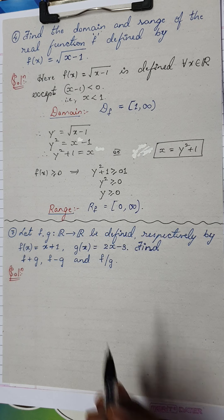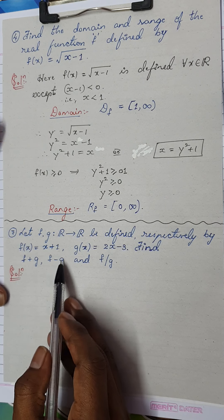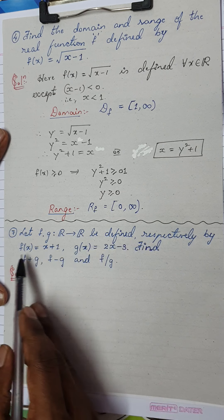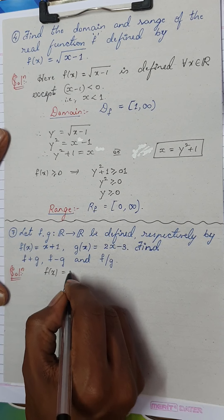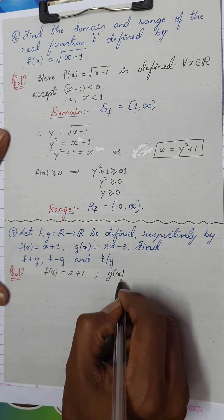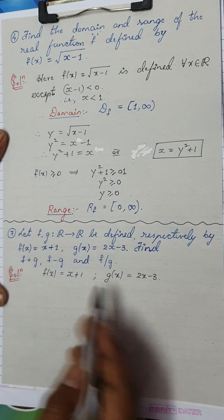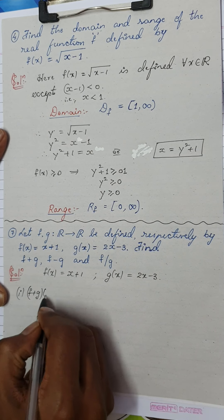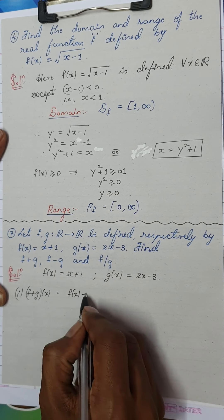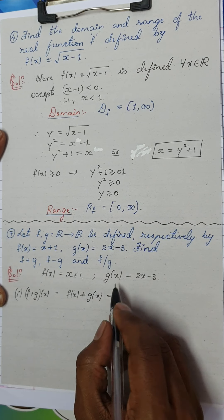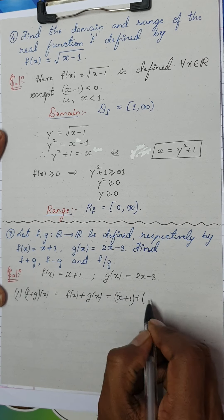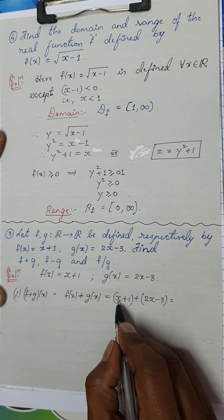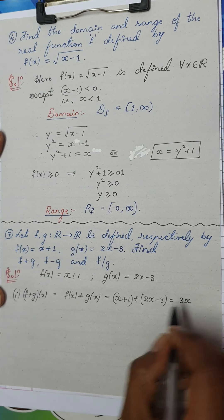Question number 7 — very simple and important for the First PUC main exam, often asked for two marks. Let f and g be real-valued functions from ℝ to ℝ defined by f(x) = x + 1 and g(x) = 2x − 3. Find f + g, f − g, and f/g.